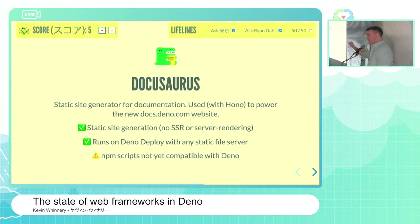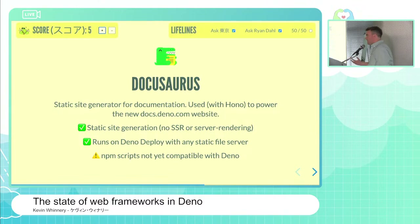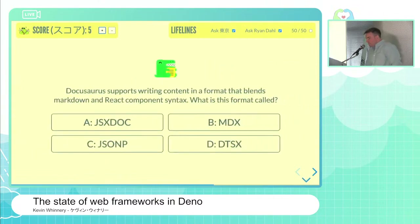Another framework that works great on Dino and Dino Deploy is Docusaurus, which I use for the documentation site at docs.dino.com. As a static site generator, it works great with Deploy. I have a Hono server that sits on top of it — it reads the Docusaurus-generated content from a static asset directory, and then I can do redirects and some other dynamic stuff on top of that content. One thing to note: because Docusaurus has a build process heavily based on Webpack, not all of Webpack works well in the Dino runtime, so your most likely workflow would be running NPM scripts with a Node runtime.